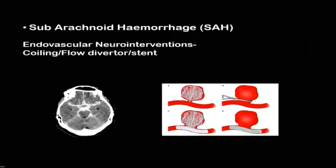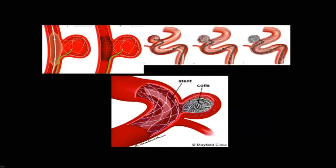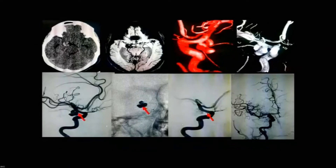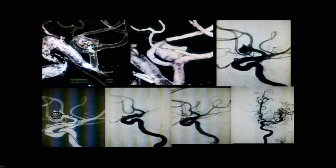Now moving to hemorrhagic stroke — subarachnoid hemorrhage. This is a grade four SAH case. The techniques used include coiling, balloon-assisted coiling, and stent-assisted coiling. The patient presented with SAH and right-sided ptosis. Two aneurysms were found: right PCOM and right anterior communicating artery. Both were coiled at the same time simultaneously, and the patient is fine. Another case: a wide-neck ACOM aneurysm was also safely coiled.